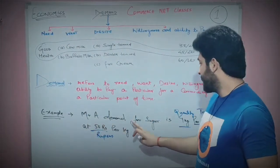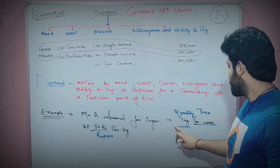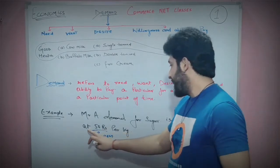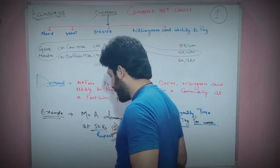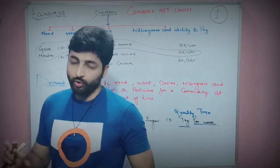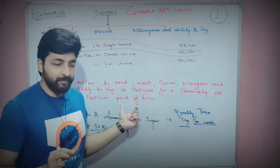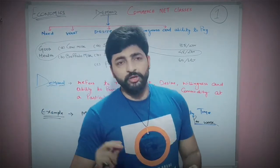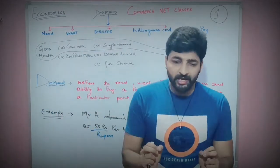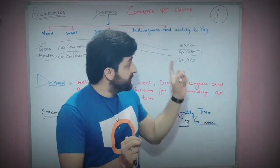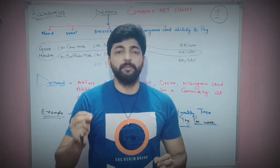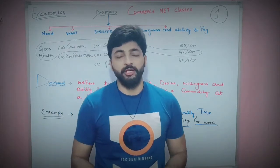For example, Mr. A's demand for sugar is 4 kg per week at Rs. 5 per kg. Simply, this is what demand is. Where we fulfill these conditions — need, desire, willingness, and ability to pay — we will demand that commodity.